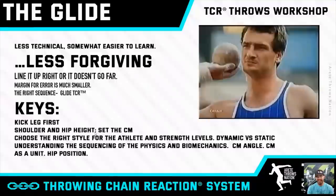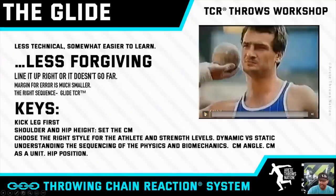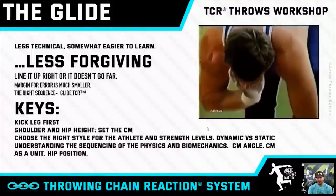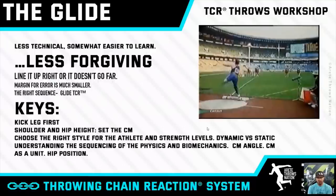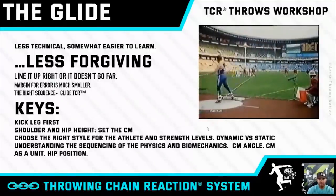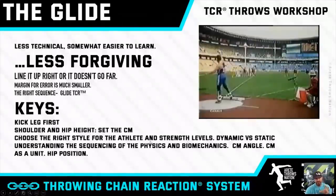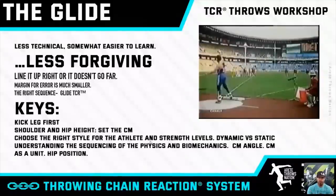One of the things we talk about with the glide is it is less technical and it's somewhat easier to learn, but this is what I'm always real clear about: the glide is super unforgiving. You have to line it up, and if you don't, it's just over. Here was Timmerman's gold medal throw from the Seoul Olympics in '88. That was one of those great moments where he hits it and the shot hasn't even landed, hands in the air, he knows it's massive — he wins the gold medal. He went over 23 meters, a huge throw. The point is the margin for error is actually smaller in the glide than the rotational throw. The rotational throw is a little more complex, but I think it gives you a little room for forgiveness where the glide doesn't.